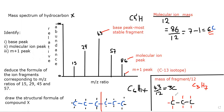C3H7 — you can check it: 12 times 3 is 36, plus 7 is 43. Correct. We can do it again with fragment 29.